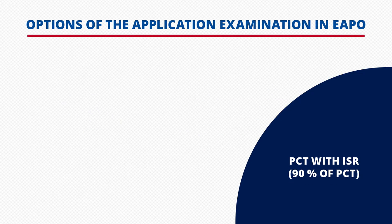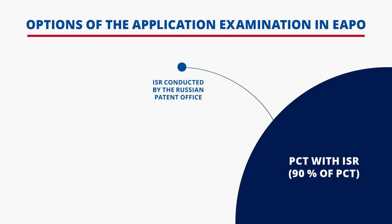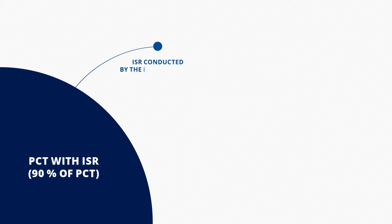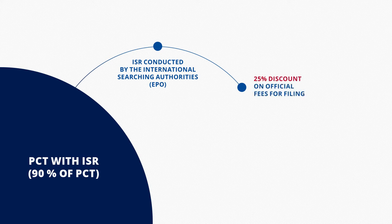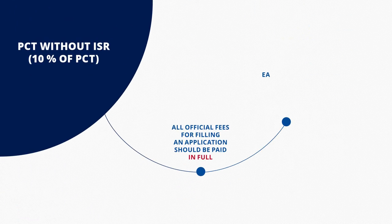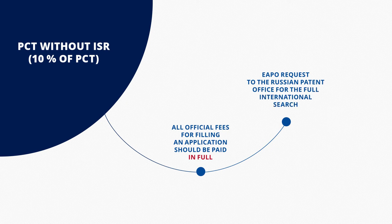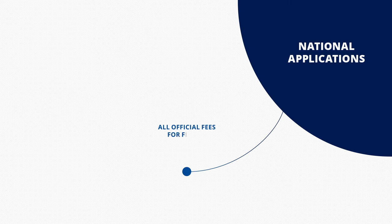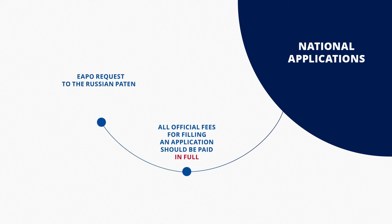There are a number of options in respect of the prosecution of the application. If the PCT application being submitted to the regional phase has an ISR, and if said ISR was conducted by the Russian Patent Office, the discount on official filing fees is 40%. The number of PCT applications with ISR is approximately 90%. If the PCT application being submitted to the regional phase has an ISR conducted by other international search authorities, the discount on official filing fees is 25%. The number of PCT applications without ISR is approximately 10%, and there are no discounts on filing fees for these applications. For national applications submitted to the EAPO directly, the official fees should be paid in full.